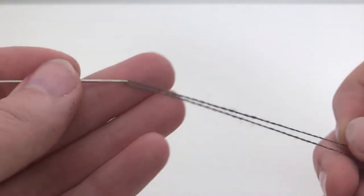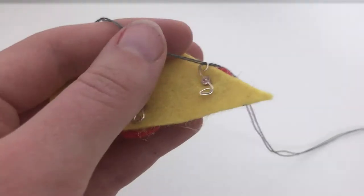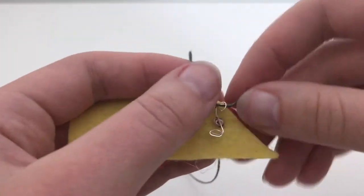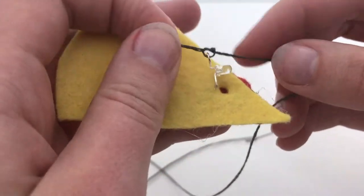Now we will be building our soft circuit. Start by threading two needles with conductive thread. Tie the ends of each thread to each end of the LED securely.